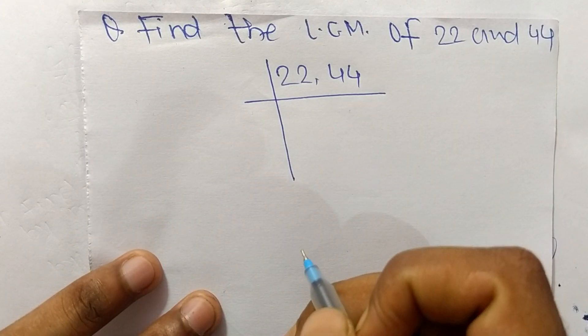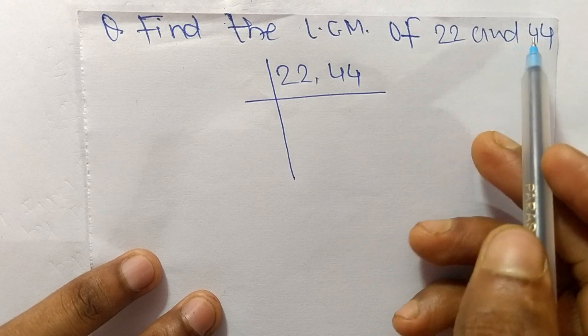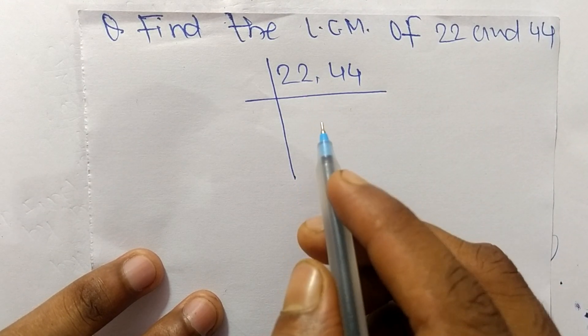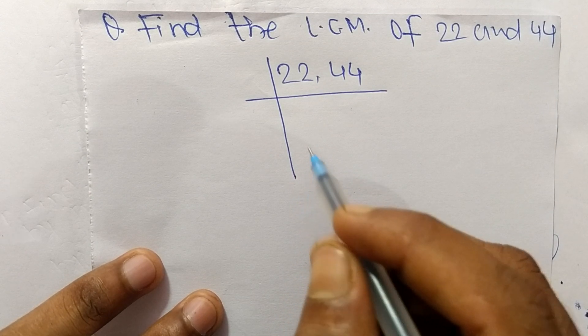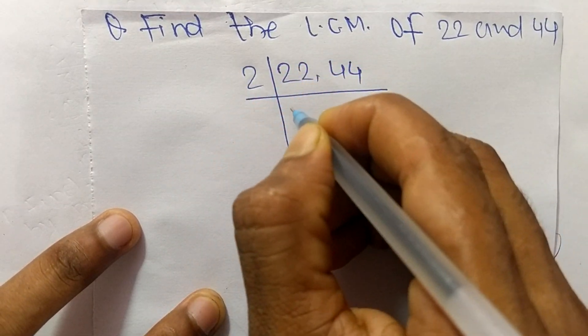Today in this video we shall learn to find the LCM of 22 and 44. To find LCM, first we choose the lowest number that can exactly divide 22 and 44. So the number is 2.